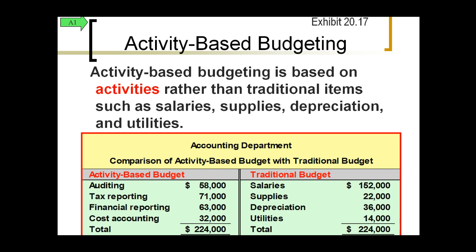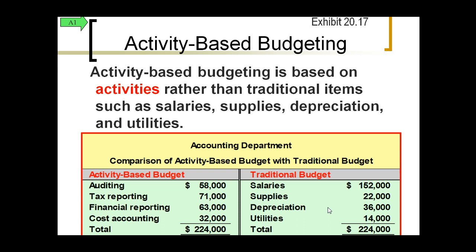If you look at the other side, the cost stays the same at $224,000, but instead of being broken up by the activities each individual in the department performs, it is based on salaries for the individuals, supplies, depreciation on computers or other equipment needed to run the department, and their portion of the utility costs associated with individuals in that particular office.